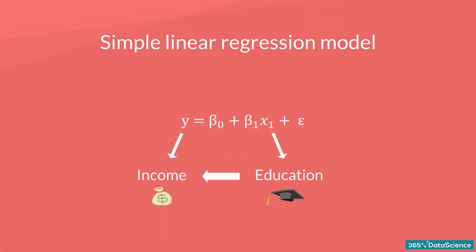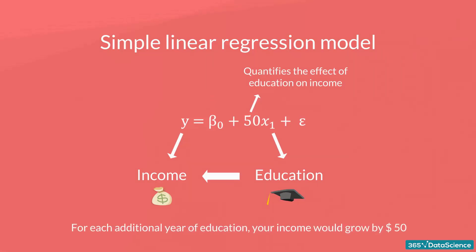Beta 1 is the coefficient that stands before the independent variable. It quantifies the effect of education on income. If beta 1 is 50, then for each additional year of education, your income would grow by 50 dollars. In the USA, the number is much bigger, somewhere around 3 to 5 thousand dollars.